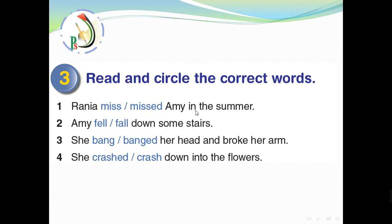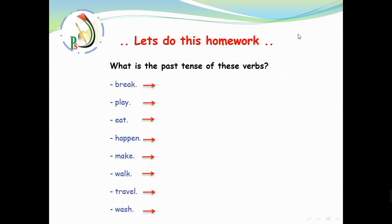Rania missed Amy in the summer, and last summer, or missed. It was the past. Amy fell or fall down someday. In the past at summer camp. Fell. Very good. Three. She banged or bang her head and broke her arm. She banged her head and broke her arm. Four. She crashed or crash down to the flowers. She crashed down into the flowers. Because as we said, we talk about summer's adventure. We talk about Amy's adventure last summer. And by getting this point, we reach to the last part of this video.